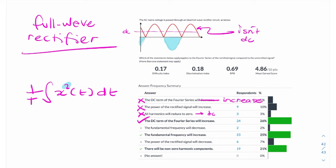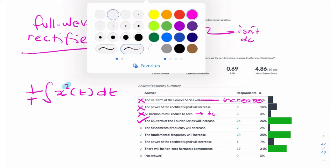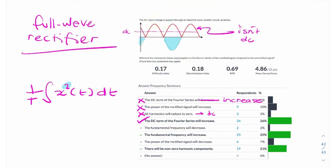The next option, the fundamental frequency will decrease. The fundamental frequency. So when we talk about the fundamental frequency, we're talking about the period. So initially, the period of the waveform was that much. And now the period of the waveform after rectification is that much. So what's happened to the period? It's halved.